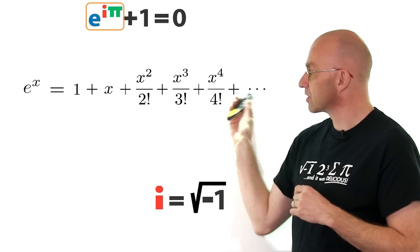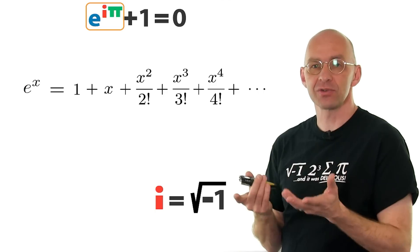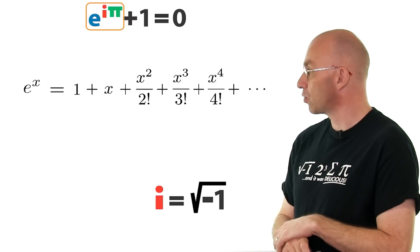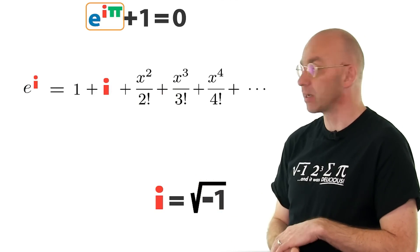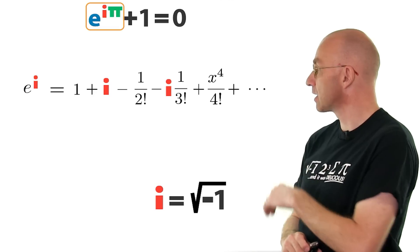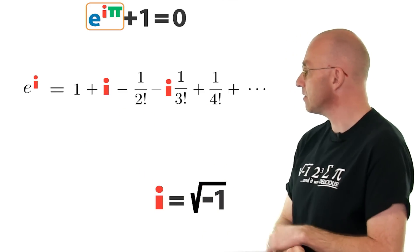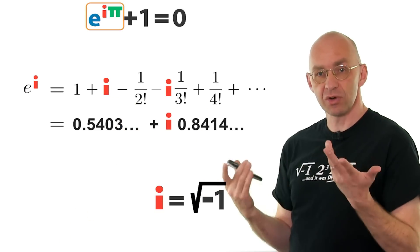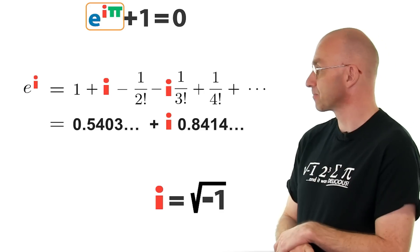Another thing we can do with an expression like this is use it to define the exponential function for other sorts of numbers that can be multiplied and added — for example, the complex numbers. So we can figure out what e to the power of i is by substituting into the series. i is that, i squared is minus one, i cubed is i times minus one, and i to the power of four is just one. We add up all the terms without an i — every second one — to get one number, and add all the terms with an i to get another. That gives us a complex number, and so we've defined what e to the power of i is.